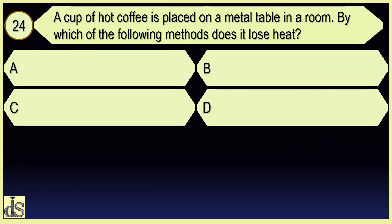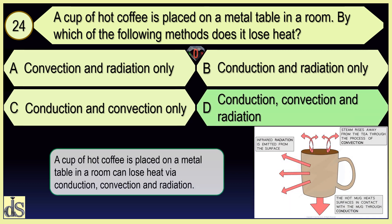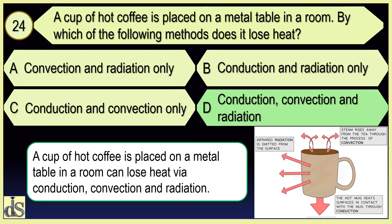A cup of hot coffee is placed on a metal table in a room. By which of the following methods does it lose heat? Conduction, convection, and radiation.